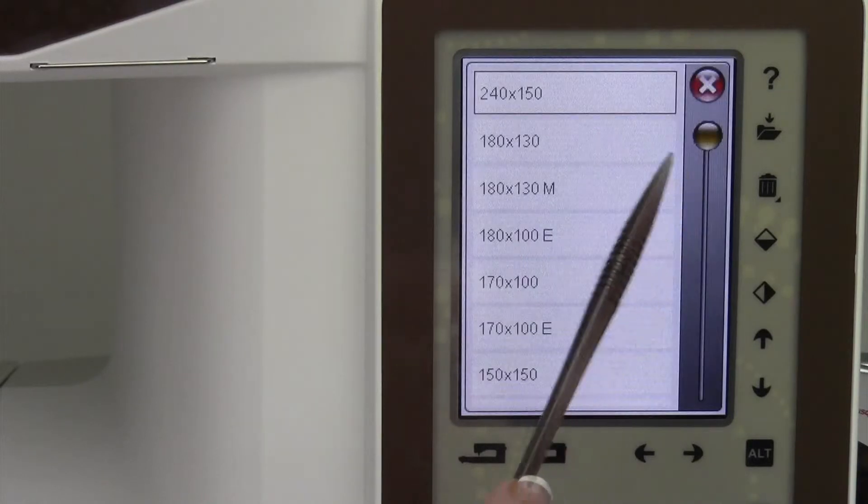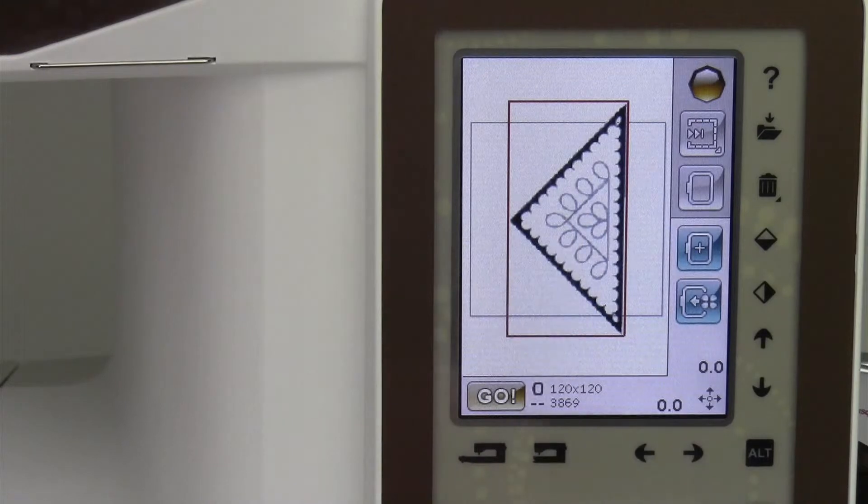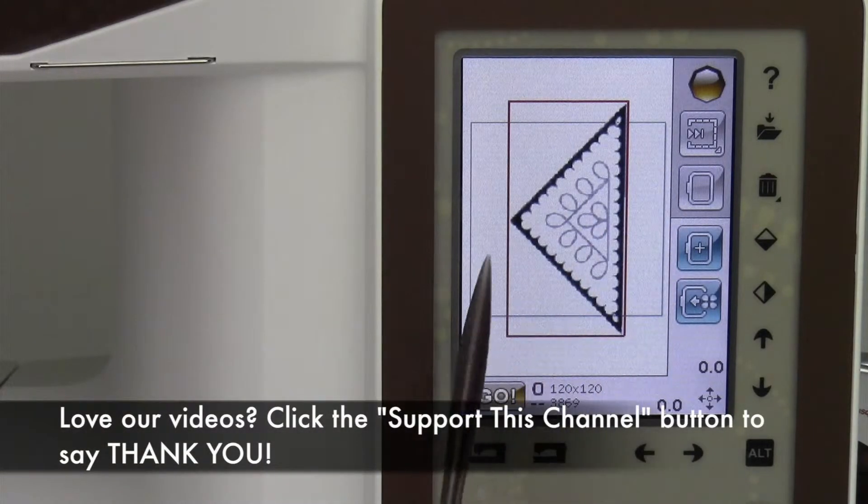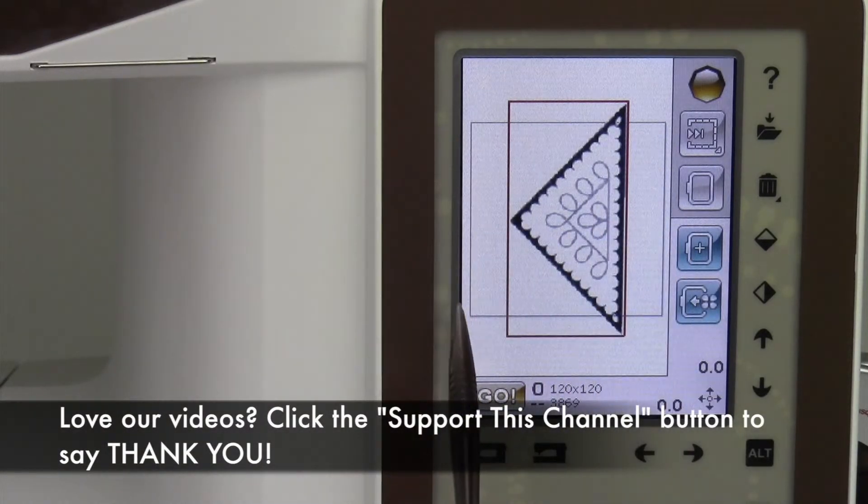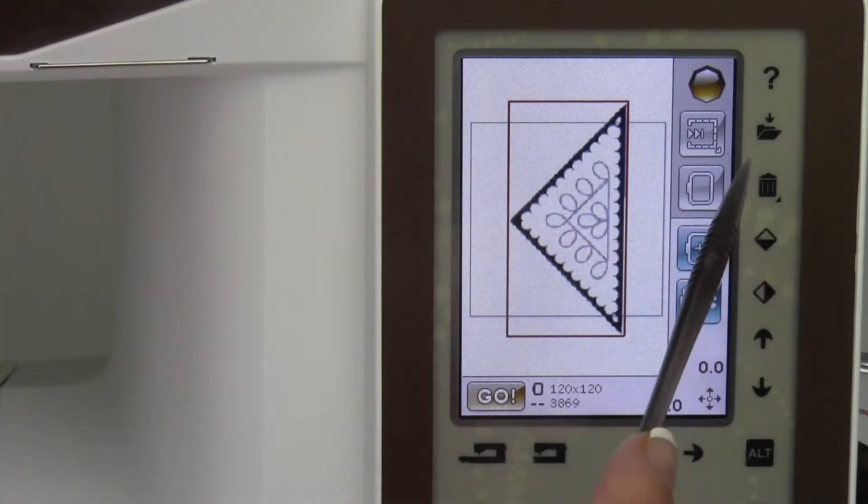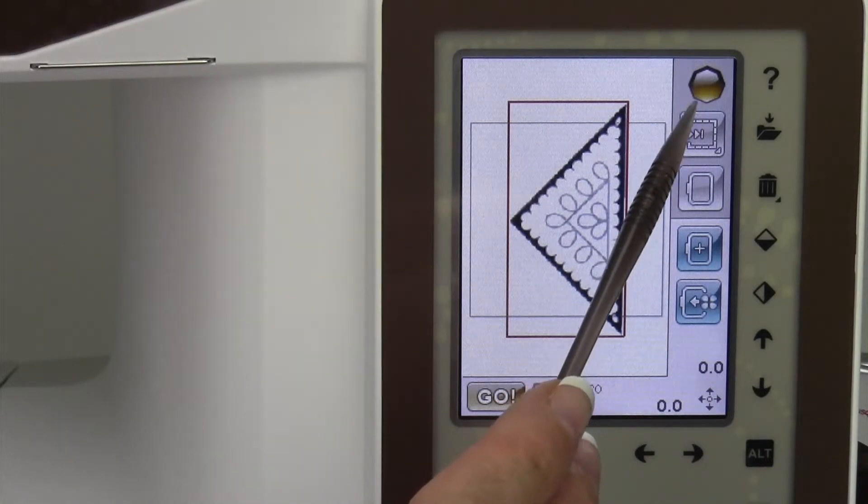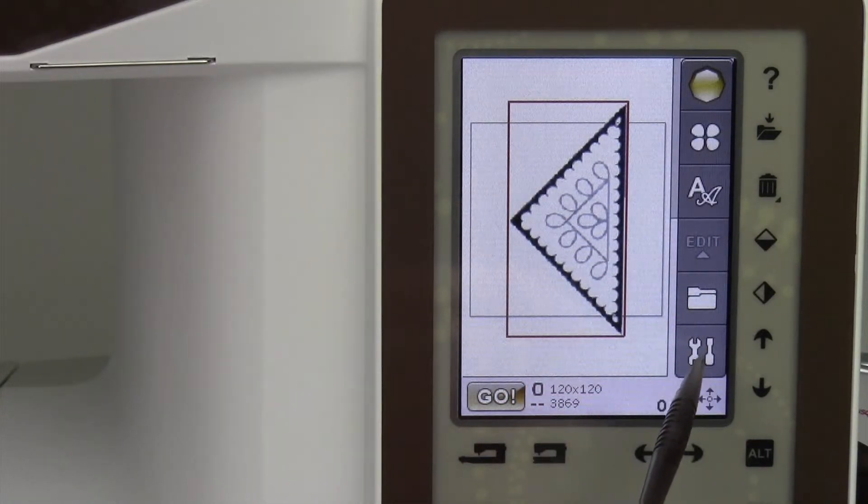When you go here, you can tell it, for example, the 120 by 120. This design is not going to fit in that hoop, as you can tell by the perimeter of that gray outline. That's the hoop. Let's go ahead and show you how you can tell the machine which hoops you do own so it will always pick the right one for you.